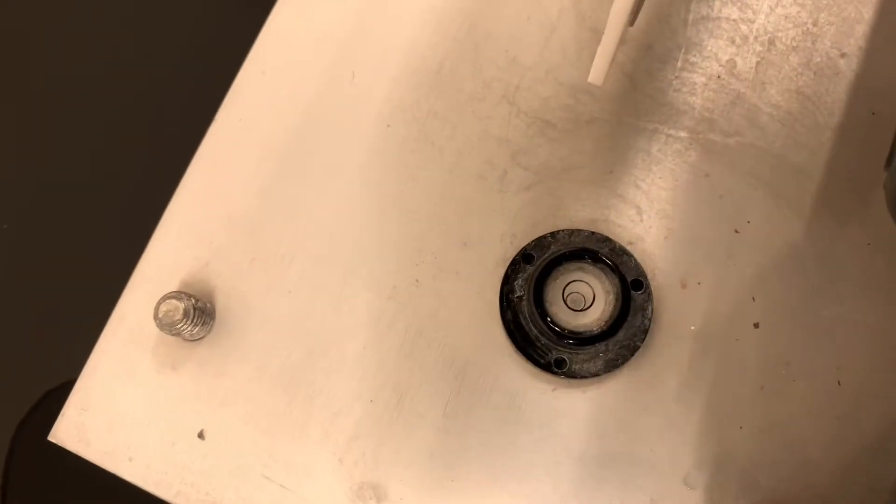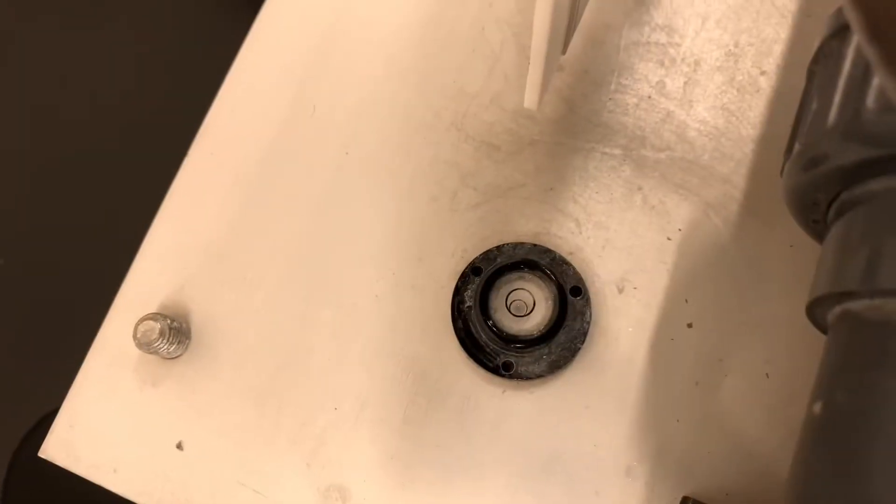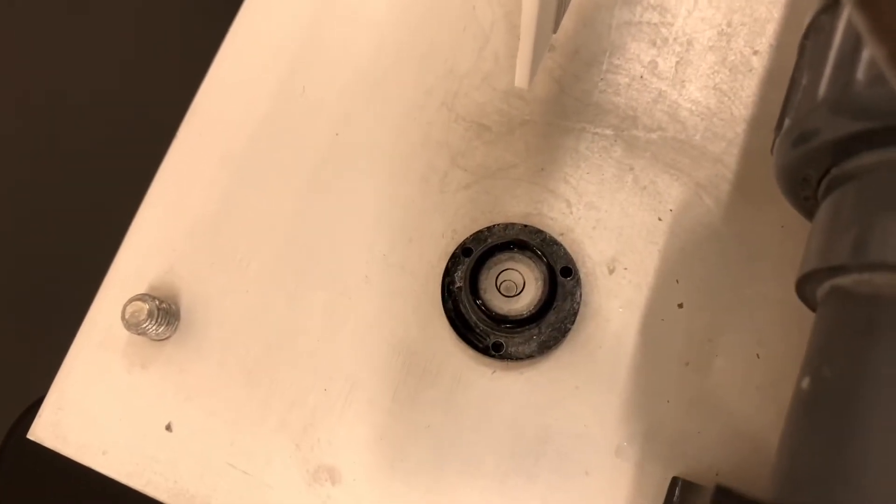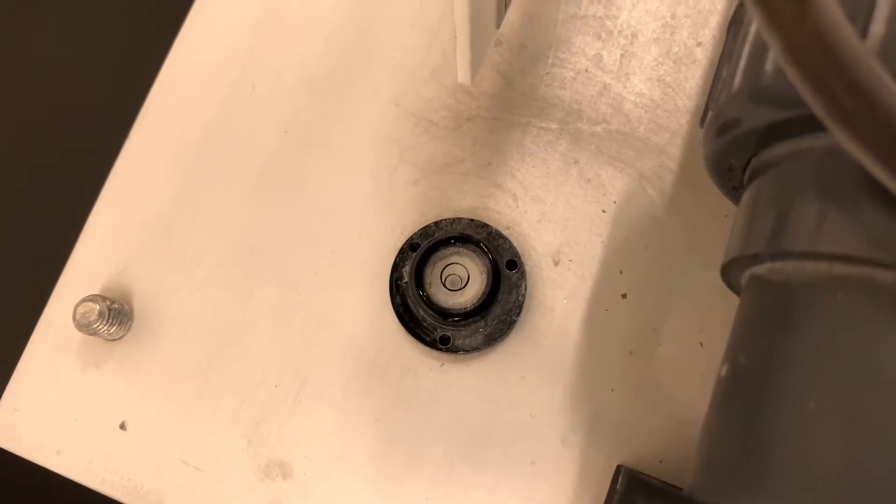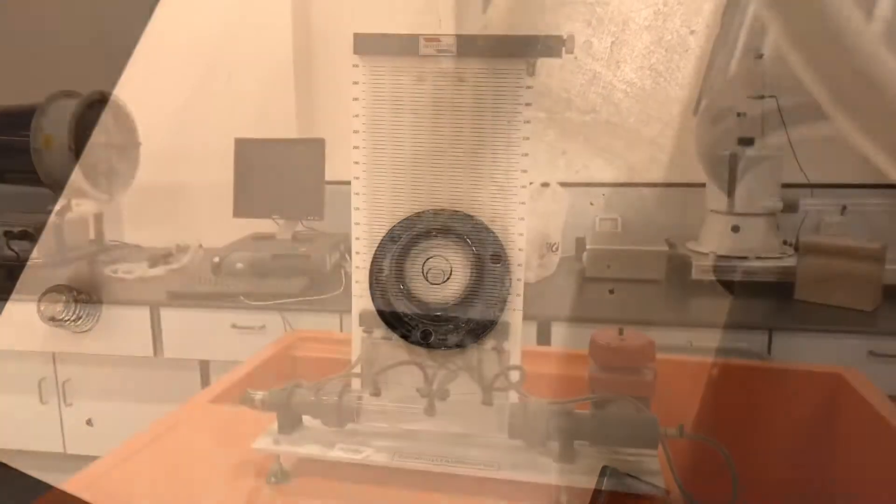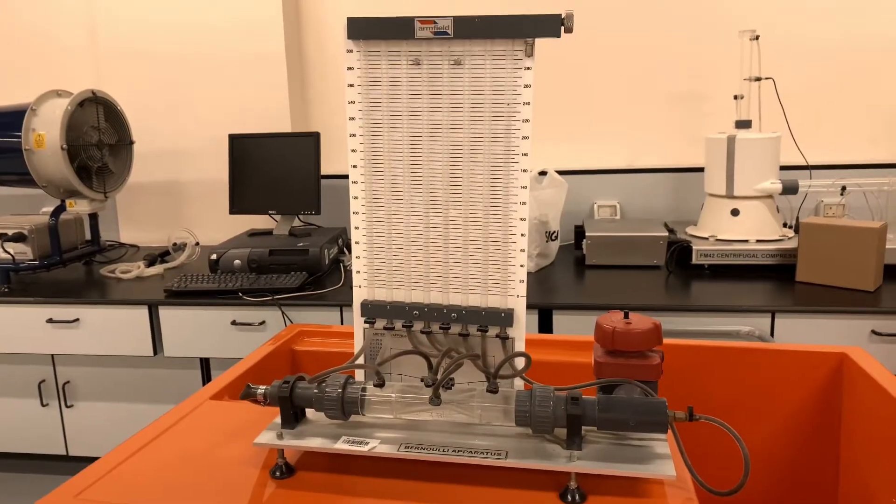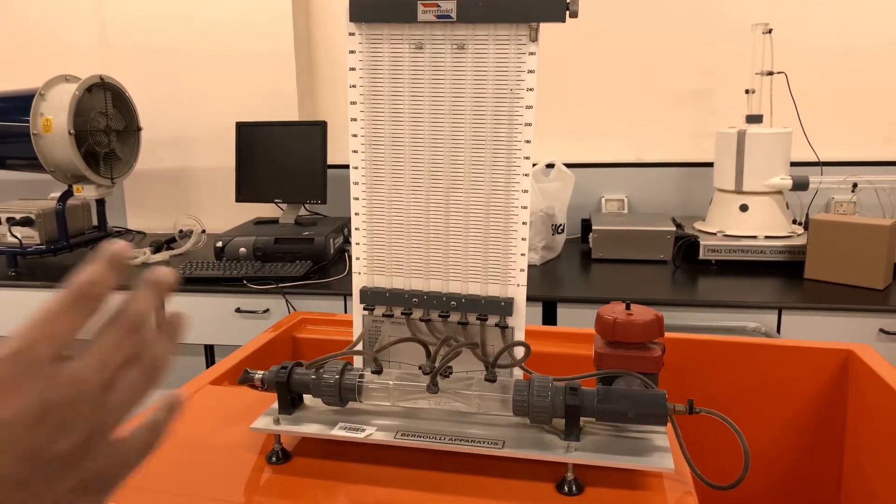The level is important because in the Bernoulli equation, as you have seen, there is the elevation factor which is z1 and z2, so we need to ensure that it is leveled. In today's experiment, we are trying to prove the Bernoulli theorem experimentally. This is the Bernoulli apparatus.